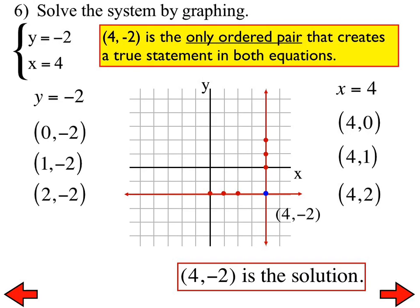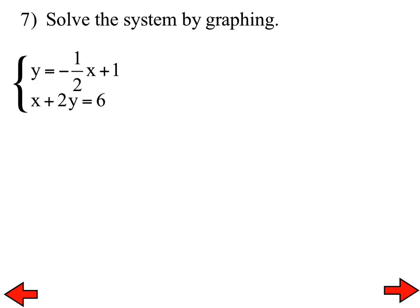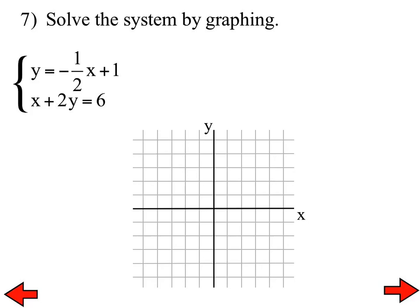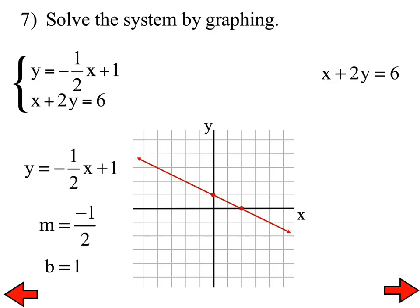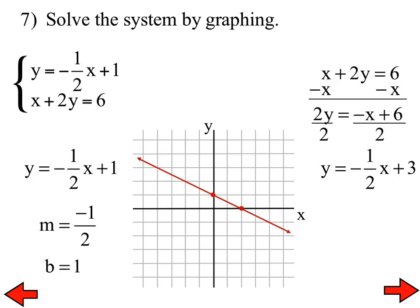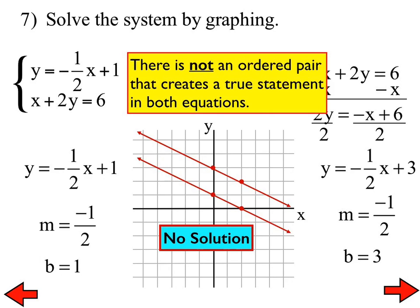Let's go to number 7. What is different about what your graph looks like compared to all the other ones? The two lines never intersect each other. So what do you think the solution should be? No solution. The solution is found where two lines intersect each other, but if they don't intersect, that means there cannot be a solution. There is not an ordered pair that will make a true statement in both equations — it's not going to happen. Therefore, no solution.